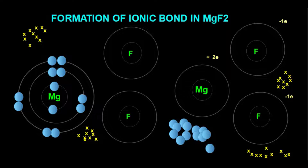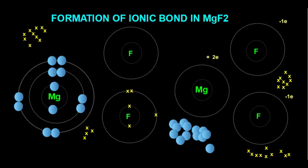Electrons of fluorine are represented with the help of crosses. We write the electron cross structure for the first fluorine atom: in the K shell there are 2 electrons, and in the L shell — which is the valence shell — there are 7 electrons. So we place 7 electrons in the L shell: 1, 2, 3, 4, 5, 6, 7.